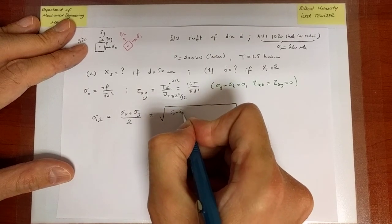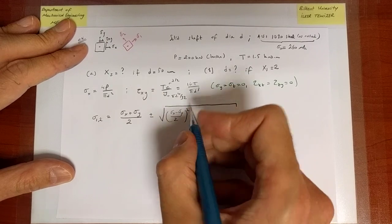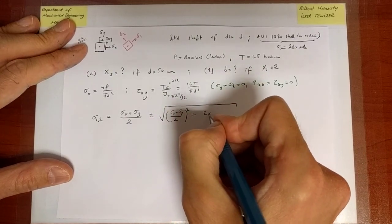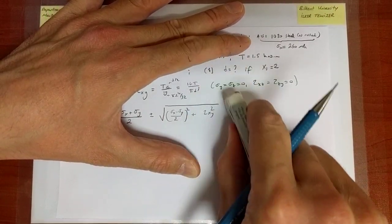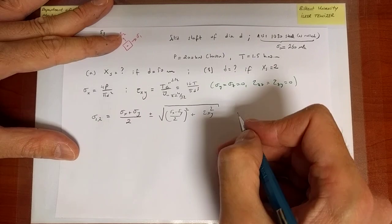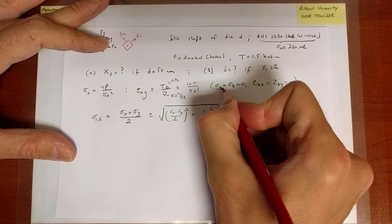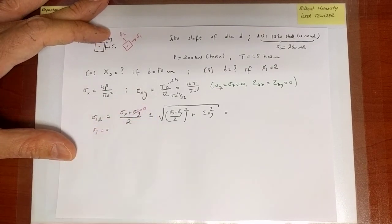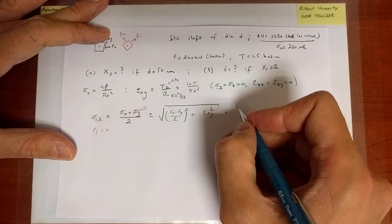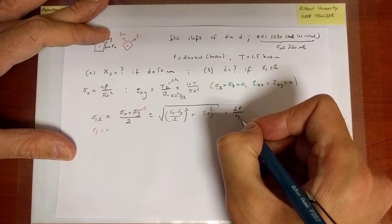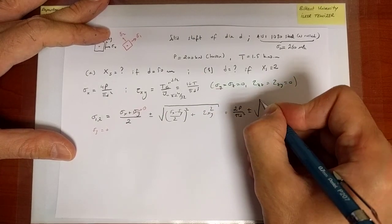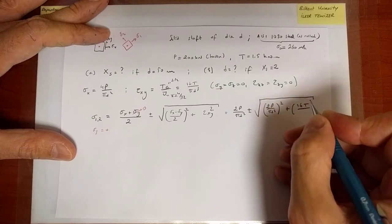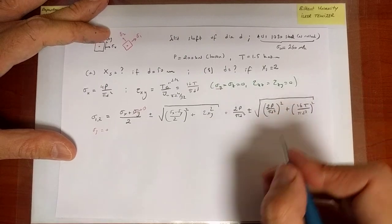The principal stresses are the center of the Mohr circle plus or minus the radius of the circle, and the radius of the circle is sigma x minus y over 2. You take the distance of the sigma x point or the y point to the center, square it, plus you square the shear stress, square root everything, that would be the radius of the circle. Plus minus would give us the two principal stresses. In this particular case sigma y is equal to 0, so this is gone. We don't have to worry about the third direction. Sigma 3 is automatically equal to 0. And therefore we can find sigma 1, 2 is 2P over pi d squared plus minus square root of 2P over pi d squared, the same quantity squared, plus 16T over pi d cubed squared.